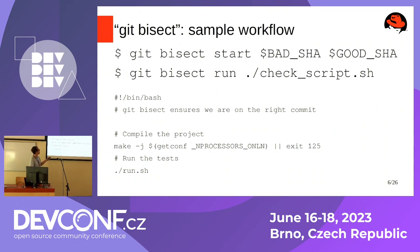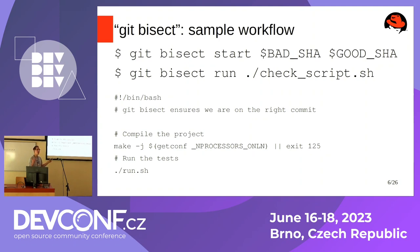The simple workflow looks like this. You start a bisection, give it a bad commit and a good commit, then just run the bisection. The script can be a simple wrapper — you don't need to check out the commit because Git does that for you automatically. But you do need to deploy your application, because Git doesn't know how. Skip the commit if that deployment fails unless it's expected, then return an error code and run your test suite.